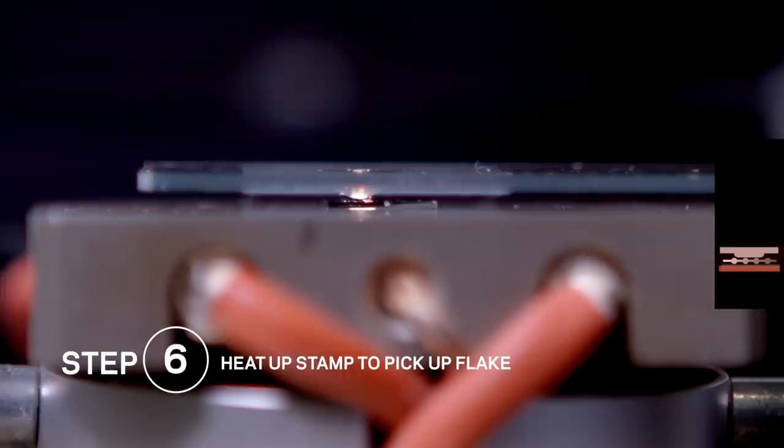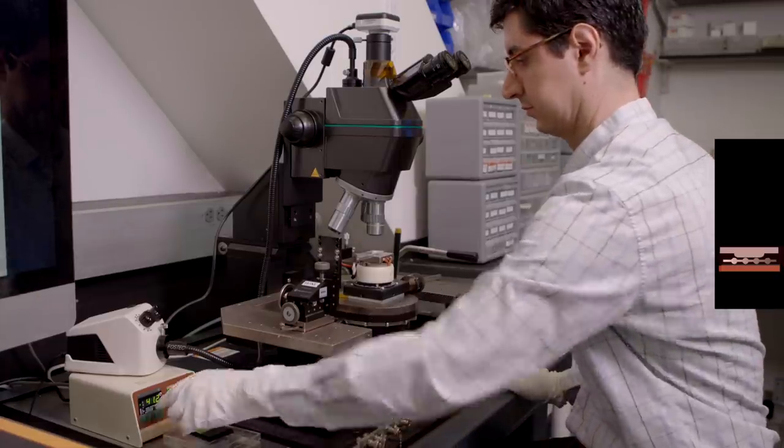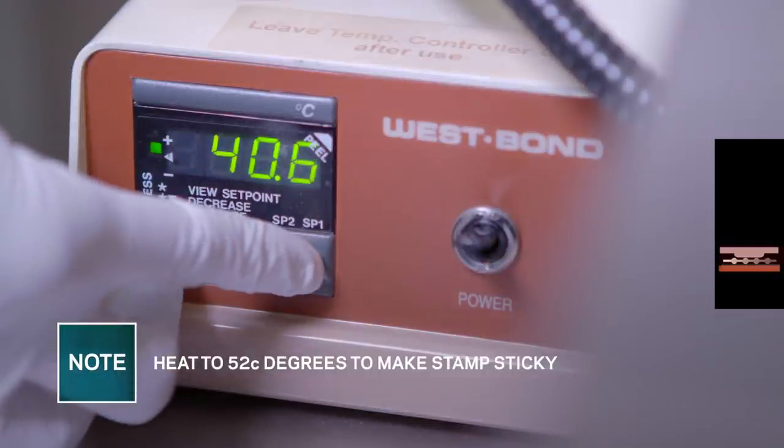This metal block here is a heater connected to the microscope stage that we'll use to heat up the stamp. This is the temperature controller that we use to set the precise temperature of the heater.